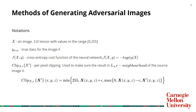Now the second part: methods of generating adversarial images. Some notations: x is an image as a 3D tensor with integer values in range 0 to 255; y-true is the true class for image x; J(x,y) is the cross-entropy cost, the negative log probability of the true label; Clip(x) ensures results stay in the L-infinity epsilon neighborhood of source image x.